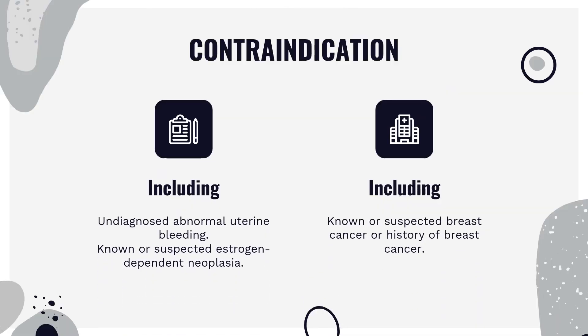Contraindications include: undiagnosed abnormal uterine bleeding; known or suspected estrogen-dependent neoplasia; known or suspected breast cancer or history of breast cancer; active DVT, PE, or arterial thromboembolic disease (e.g., stroke, MI) or history of these conditions; and hepatic impairment or disease.